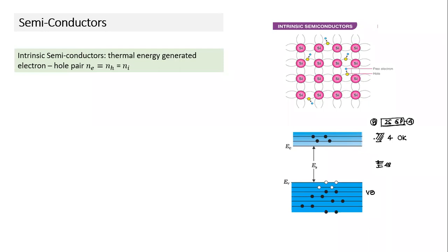Unless extra energy is given, the band splits into two parts — all lower energy states are occupied by one electron each and the upper states are empty. The lower is called the valence band and the upper is called the conduction band. At room temperature or higher, when energy is given and the energy gap in a semiconductor is less than three electron volts, some electrons in the valence band are able to move into the conduction band, where many energy states are available, making them free to move.